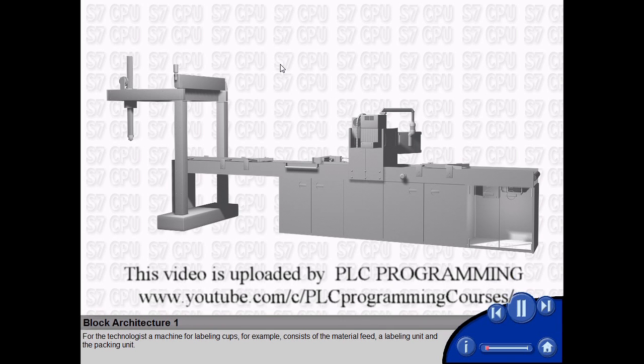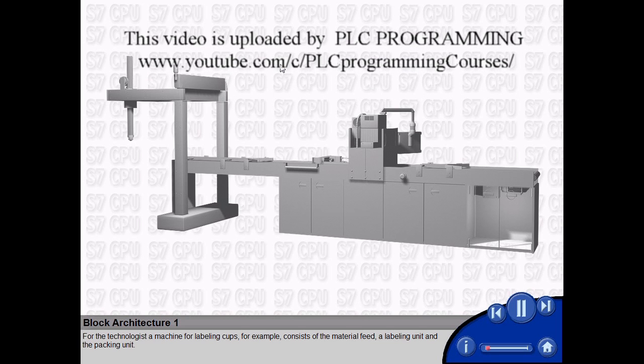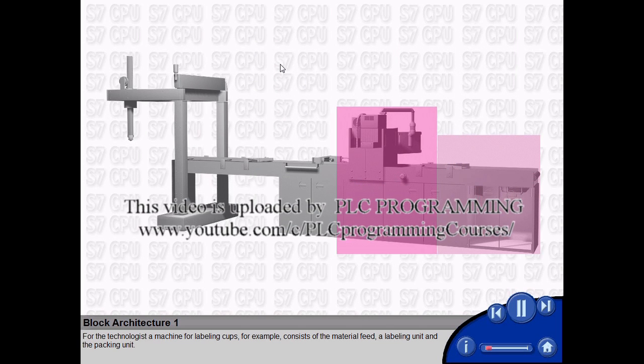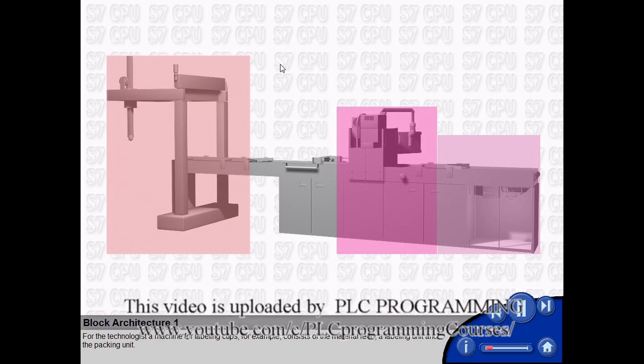For the technologist, a machine for labeling cups, for example, consists of the material feed, a labeling unit, and the packing unit.